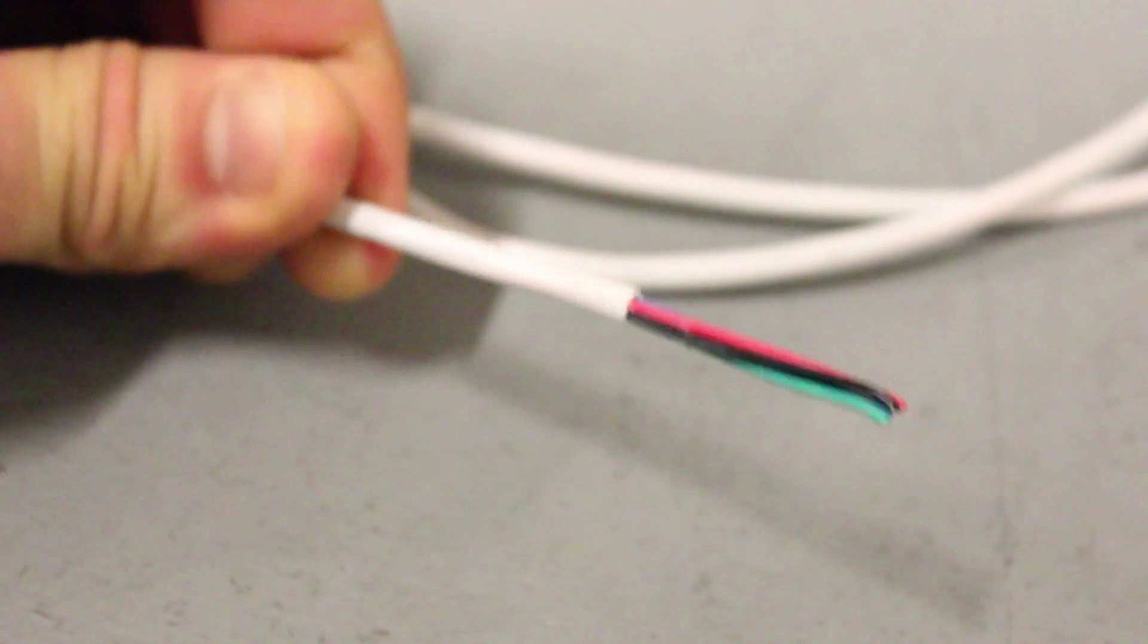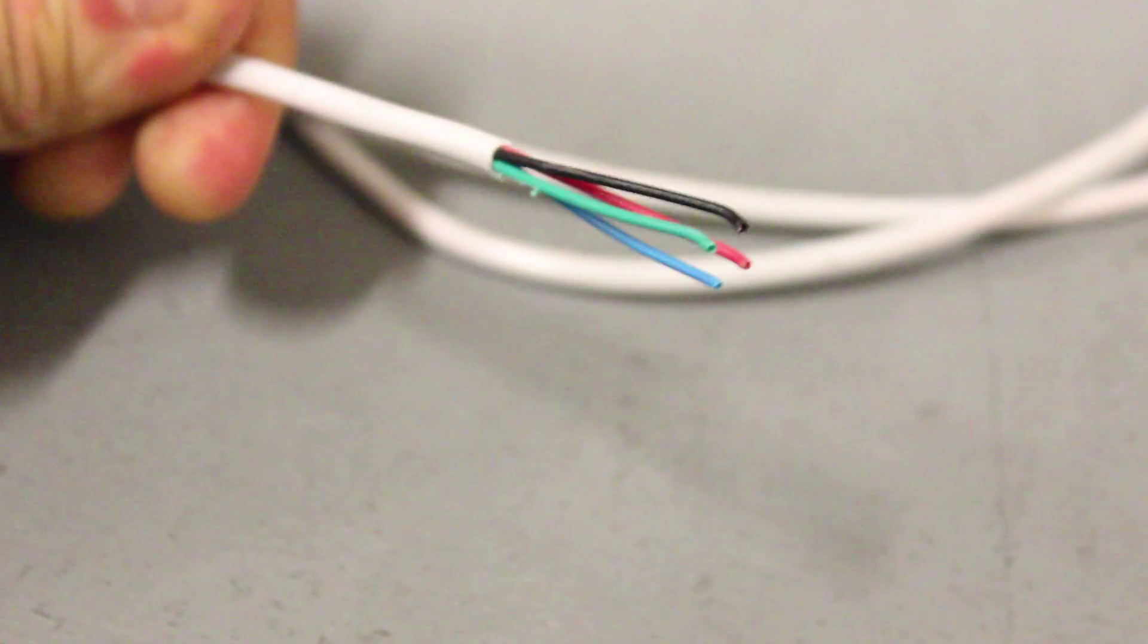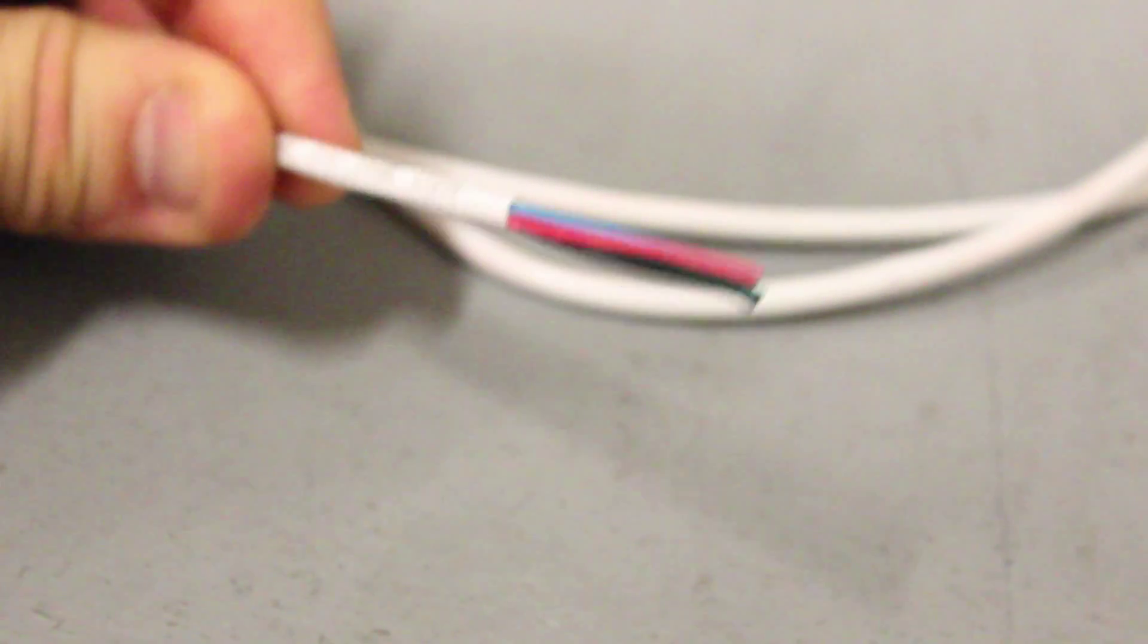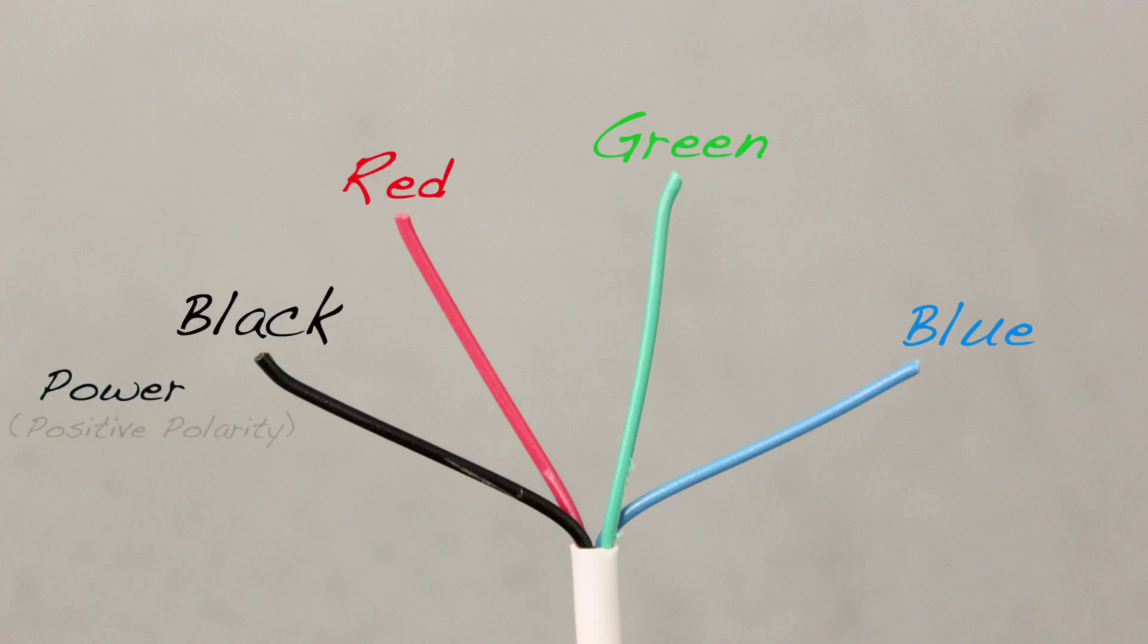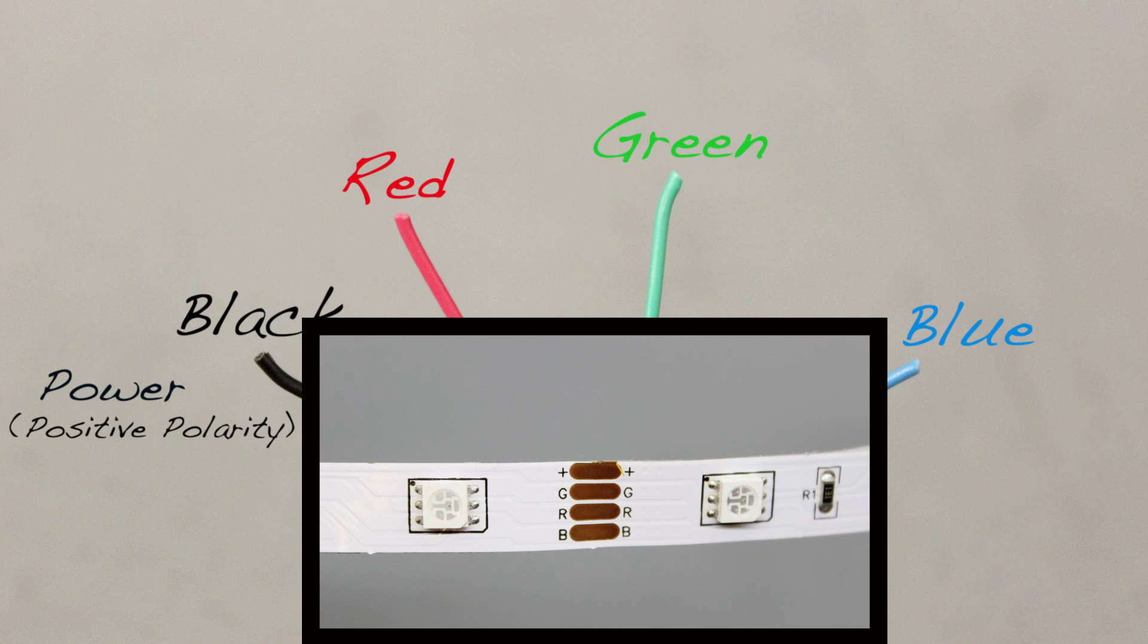After removing the outer sleeve, you will expose your four leads that will terminate to your solderless RGB connector. You'll notice that each lead is a different color. There is black, red, green, and blue. The black lead indicates power, also known as the positive polarity. The other three leads are jacketed in the colors of the signal that will be transmitted into your RGB strip. The red sleeve carries the red signal, the green sleeve carries the green signal, and the blue sleeve carries the blue signal.